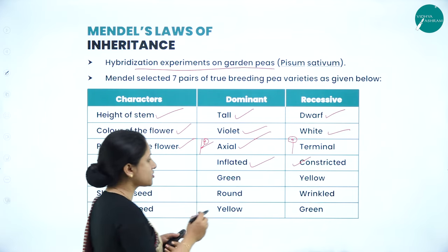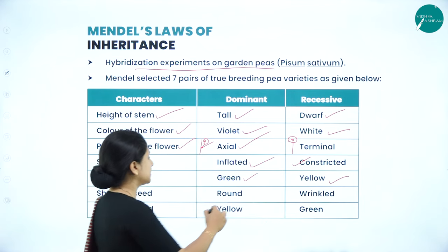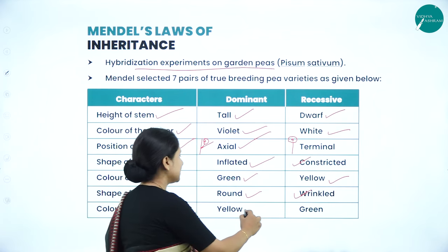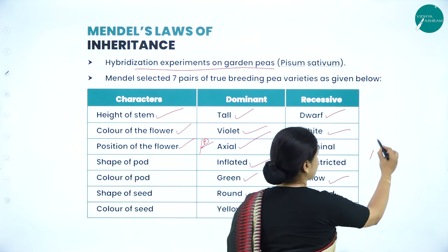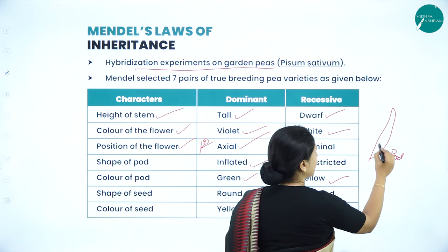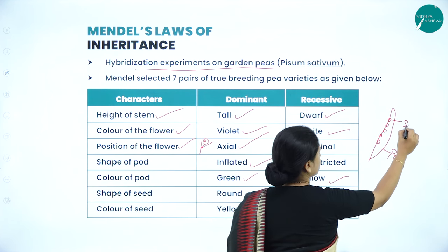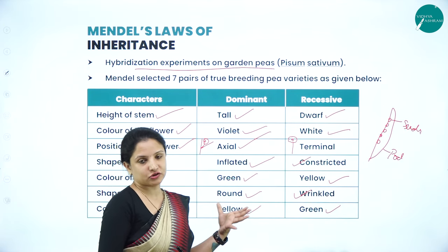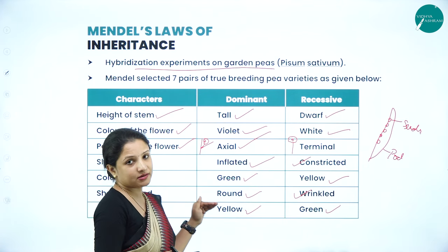He also chose the color of the pod — green and yellow. Next, the shape of the seed — round and wrinkled. And the color of the seed — yellow and green. Don't get confused: in the case of pea, the fruit is called the pod, and the seeds are inside the pod. So these are the seven characters that he chose.